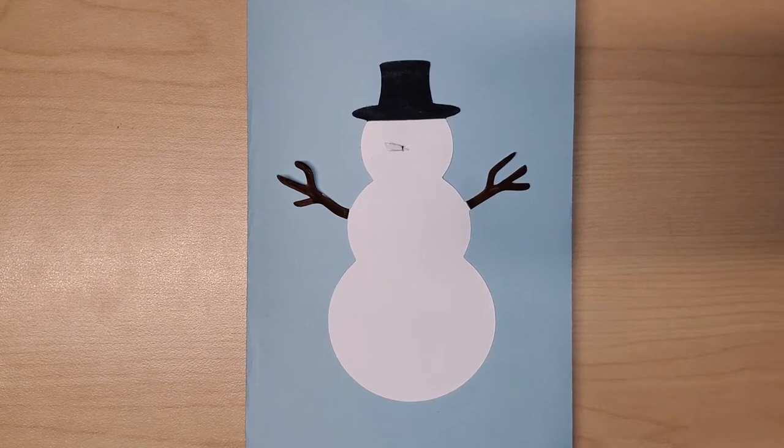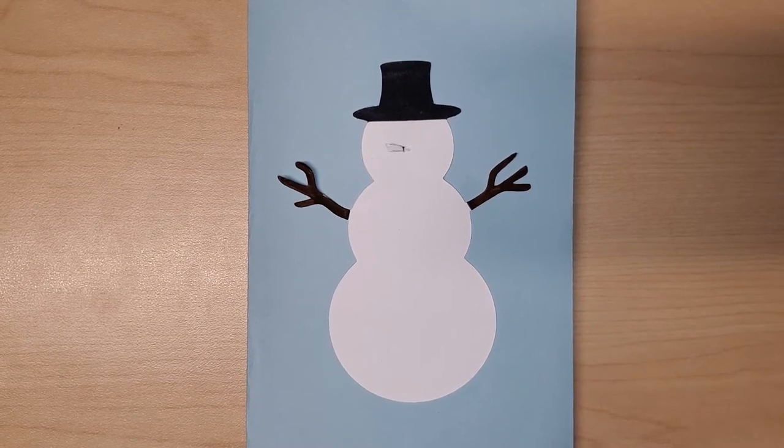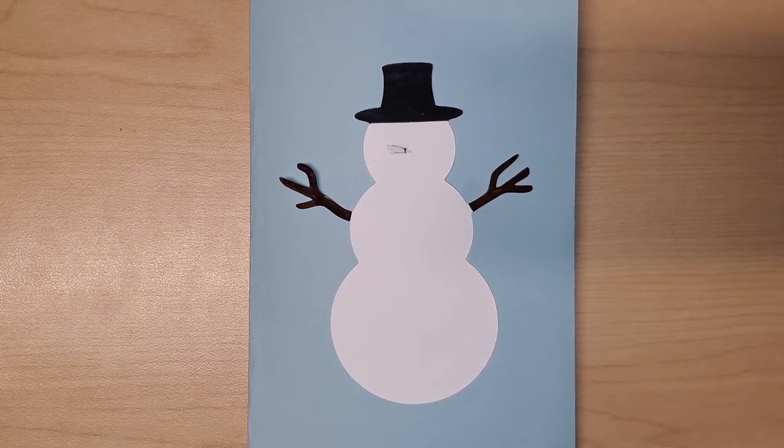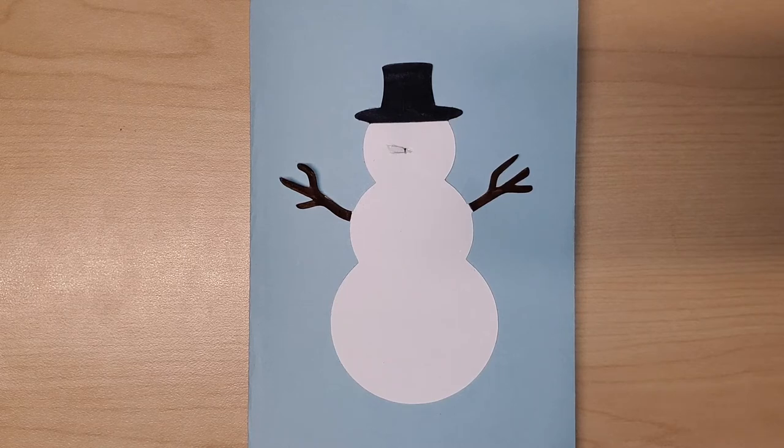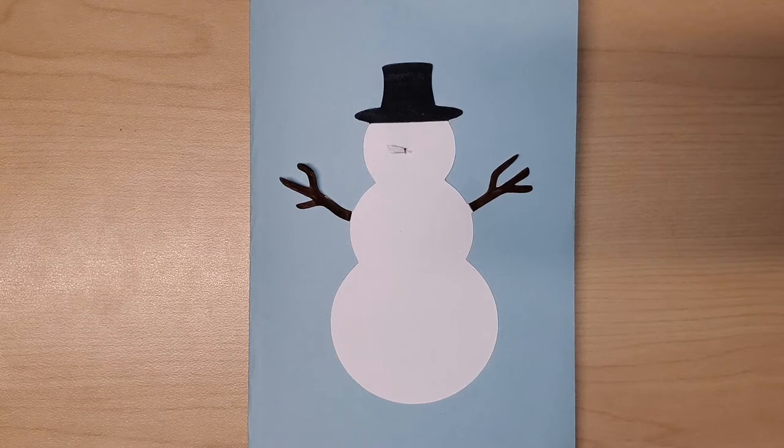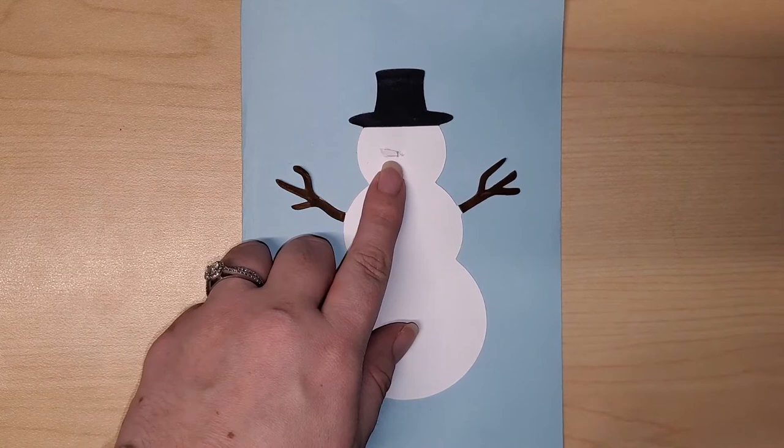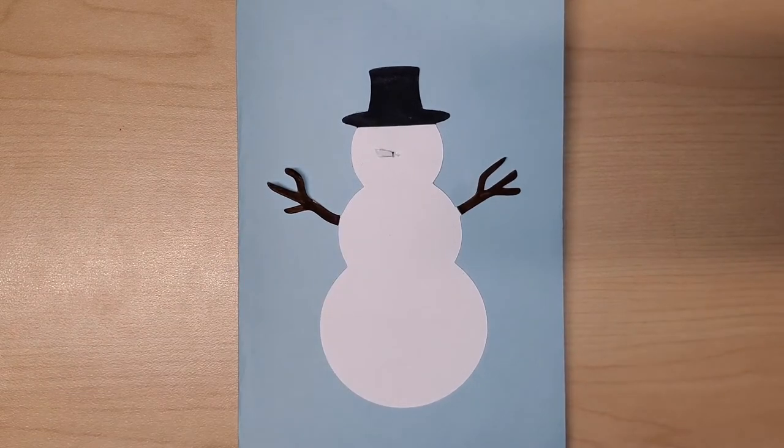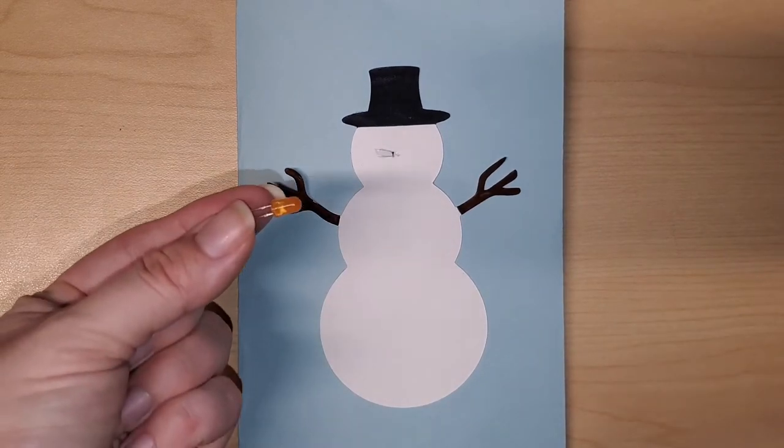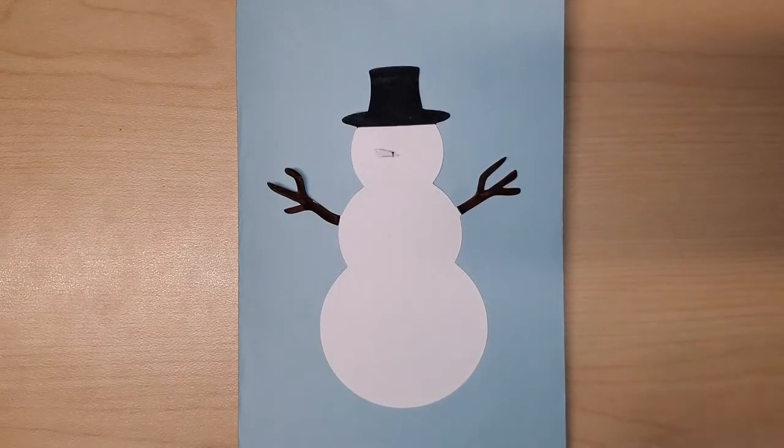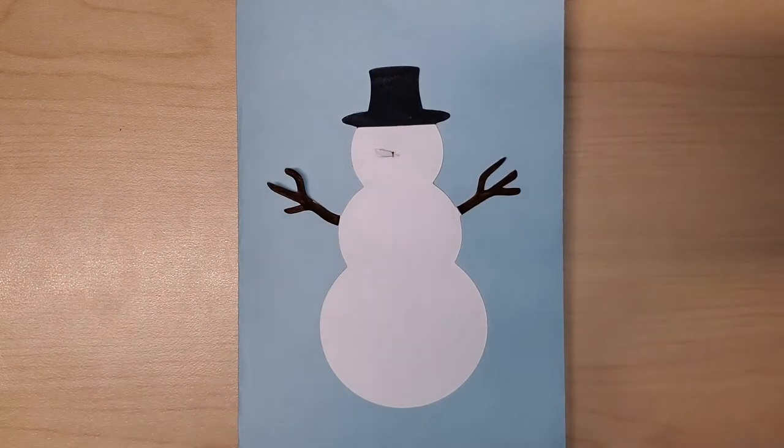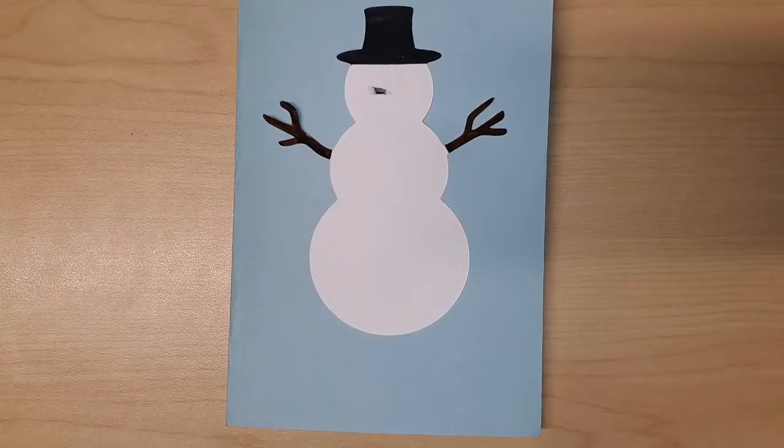Once you've placed your template what you'll want to do is cut a hole in your card either with a hole punch or scissors. Please be very careful during this part. That hole is where your LED is going to come through. So for our snowman I put a hole kind of right here so that we can put the orange LED so it kind of looks like the snowman's nose.